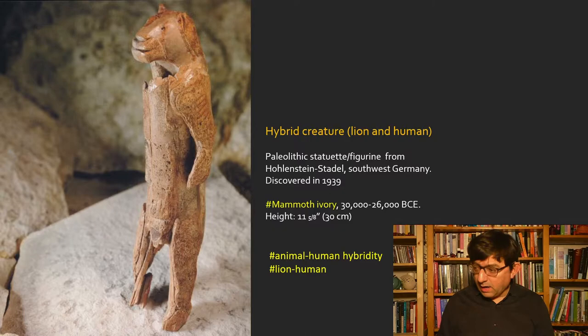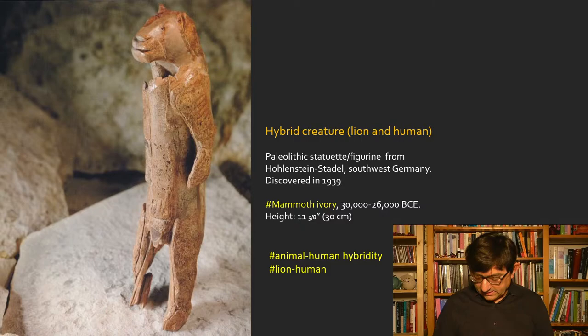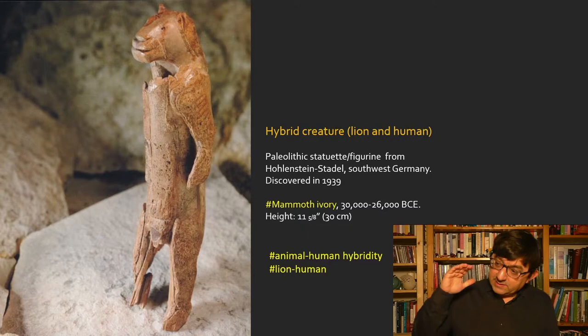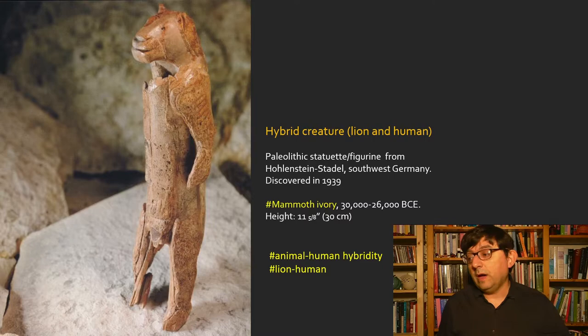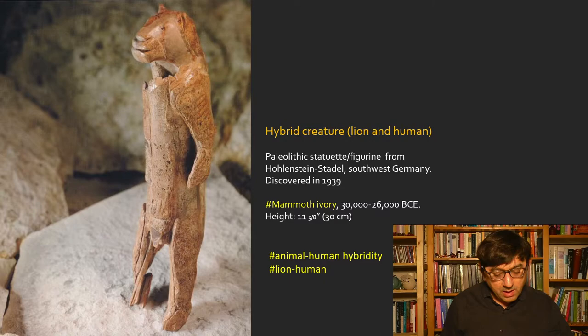My second argument, if you recall from the previous lecture, concerns animal and human hybrids and the creation of monsters, or what David Wengrow calls 'fictive anatomies.' An excellent example is this lion-human figurine from Hohlenstein-Stadel in Germany — a mammoth ivory figure about 12 inches tall, approximately 30 centimeters, dated to about 30,000 years ago. It is one of the earliest figurines we have from the Upper Paleolithic, and it was carved with a flint stone knife — you can see traces of it on its arm.